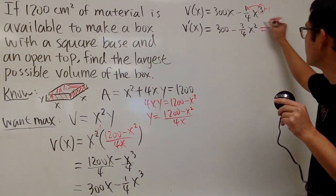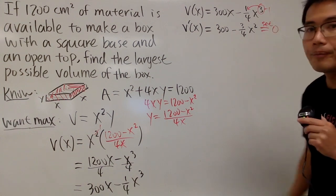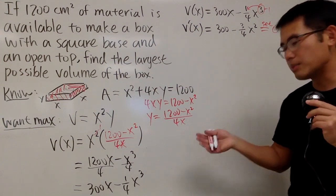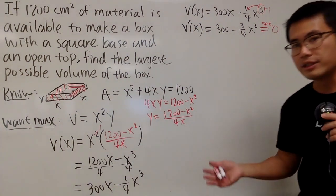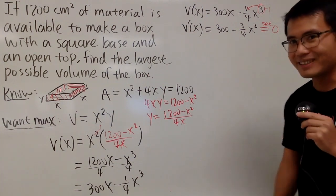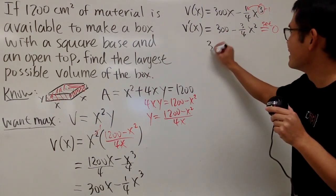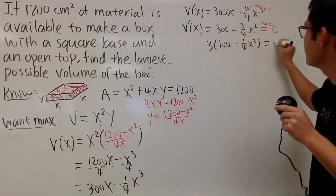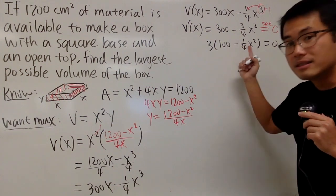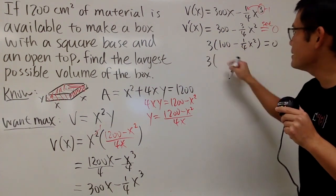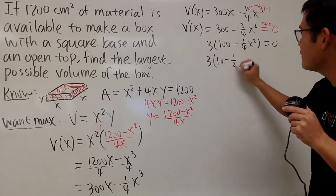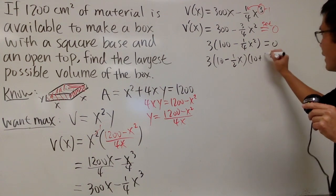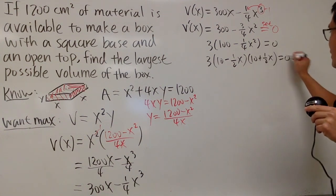And then, of course, we can go ahead and set this to be 0. And if you would like, of course, you can just move this to the other side, and then just do whatever you need to do. Take the square root, multiply by whatever, all that stuff, and you can isolate the x. But I will still try to show you guys how to factor this. So I will factor out 3 first. And I will get 100 minus 1 over 4x squared. And then right here, this is the difference of two squares. So I will look at this as 3 times, this is 10 minus 1 half x, and then the other one is 10 plus 1 half x. And right here, you get 0.